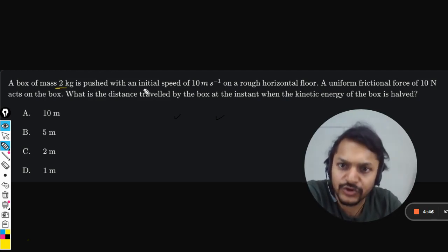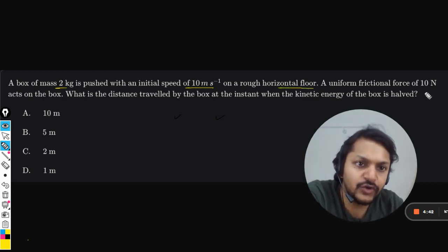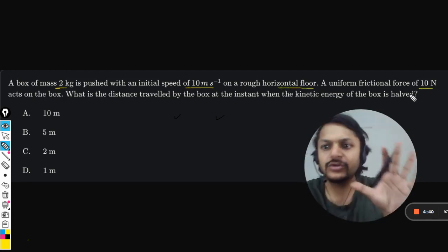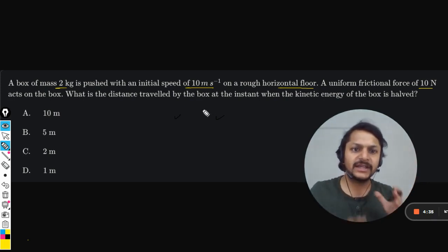with an initial speed of 10 m/s on a rough horizontal surface. A uniform friction force of 10 Newton acts on the box. What is the distance traveled by the box when the kinetic energy is halved?